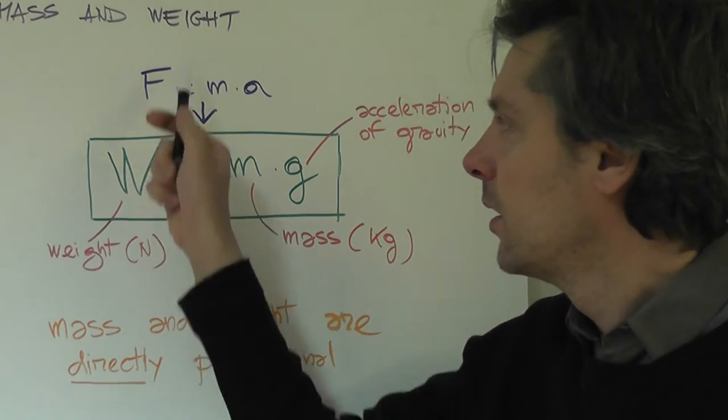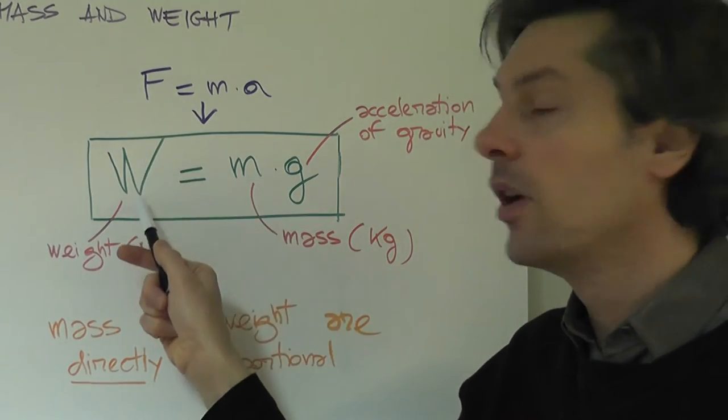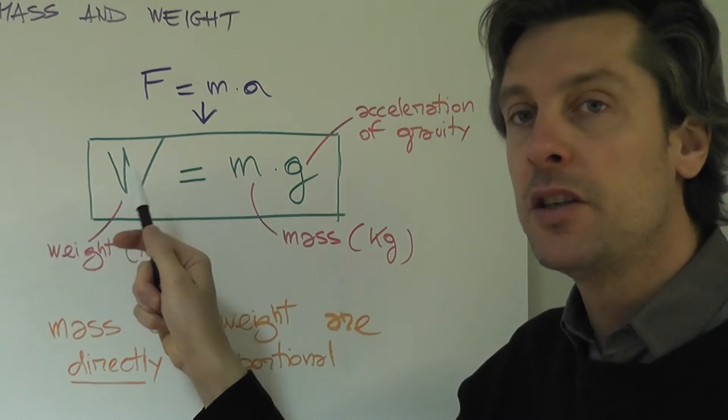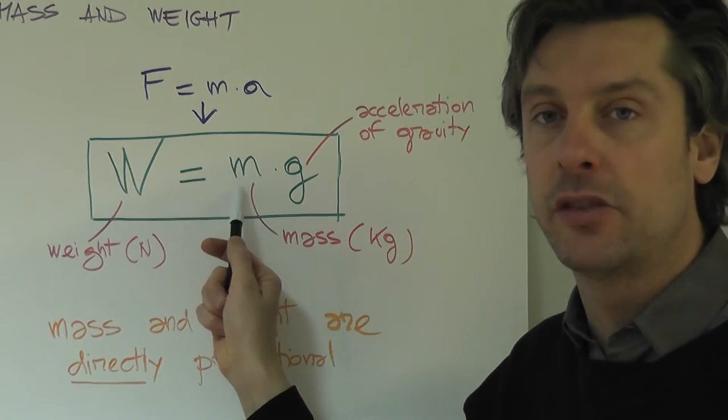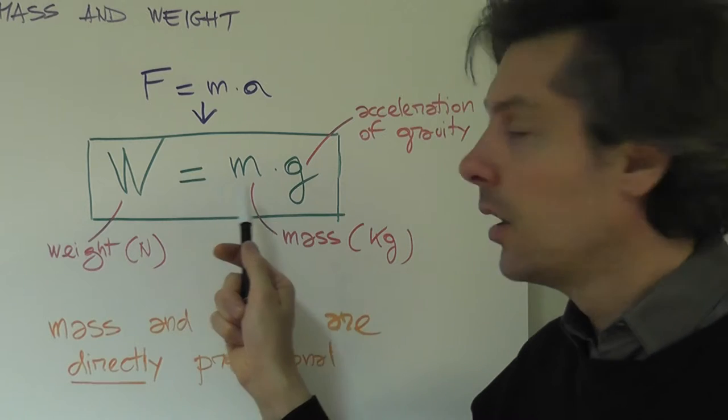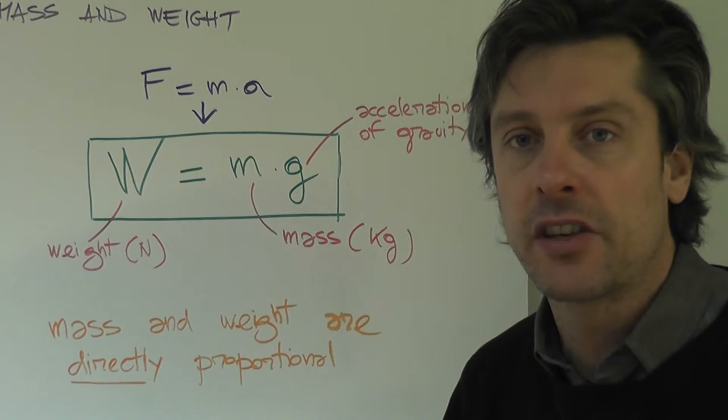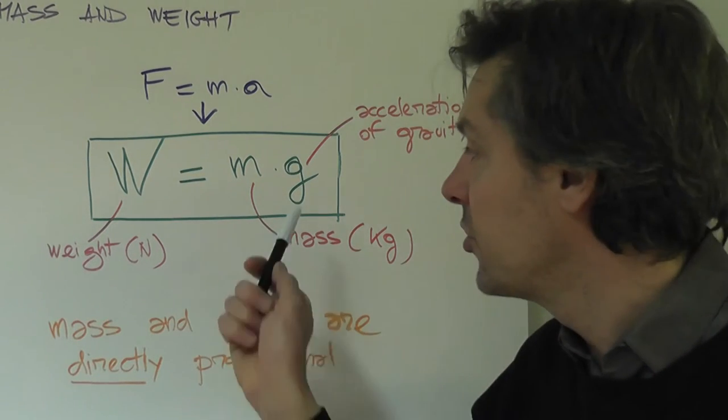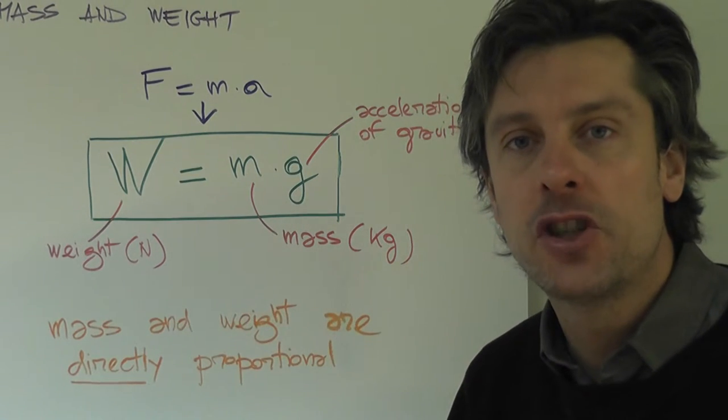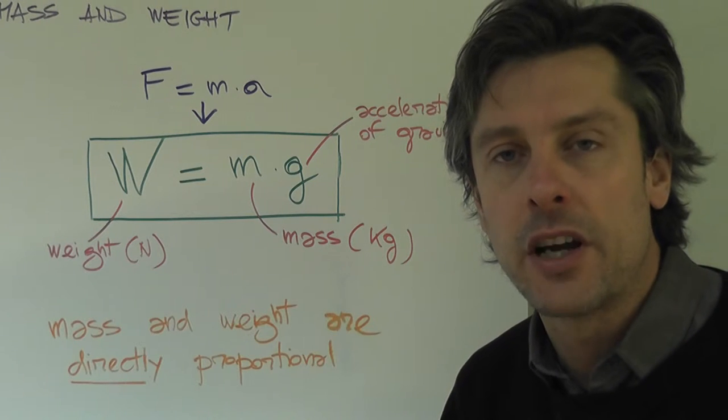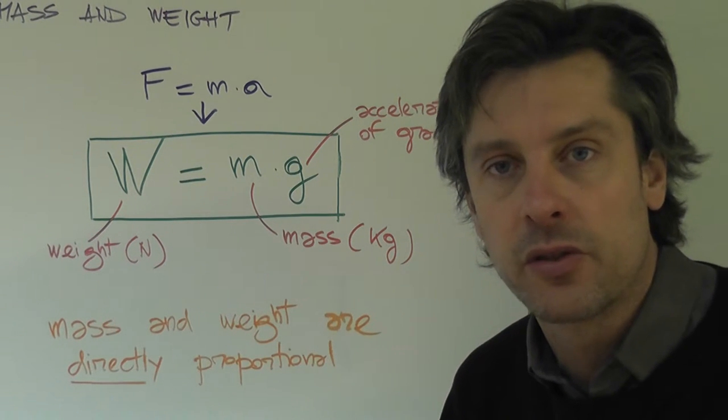Now if we replace the generic force with weight, you see that weight is related to the mass of the object. And instead of the acceleration, so any kind of acceleration, we have a very specific one. We have g. If you remember g is the acceleration of freefall, the acceleration of gravity.